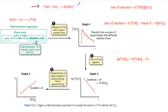Figure 9.15 shows the stages in a flash photolysis experiment to find the value of the rate constant for this reaction. The reaction is an elementary second-order reaction, so the rate of reaction equals k times the concentration of hydroxyl radicals times the concentration of SO₂, where k is the second-order rate constant.